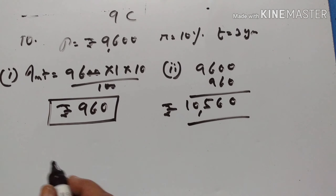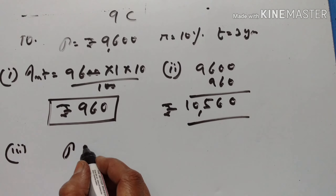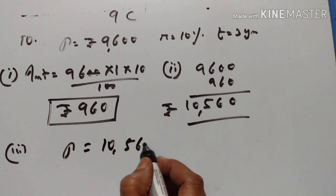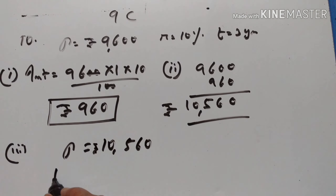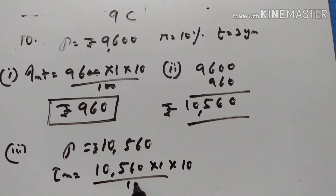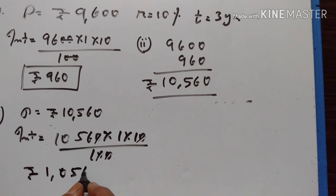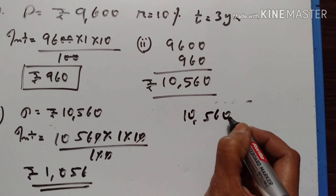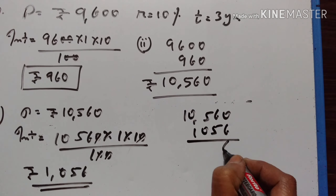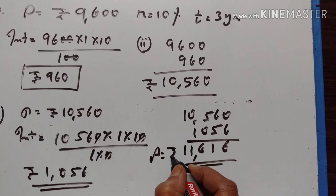Now, the interest for the second year. Interest for the second year — this amount becomes the new principal. P is equal to Rs. 10,560. So interest is equal to P, T, R upon 100. Dividing: Rs. 1,056 is the interest for the second year. Therefore, the amount is equal to Rs. 10,560 plus 1,056 is Rs. 11,616.